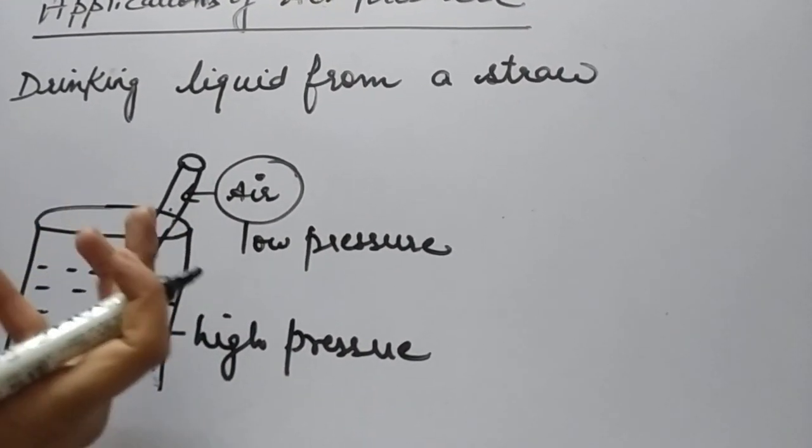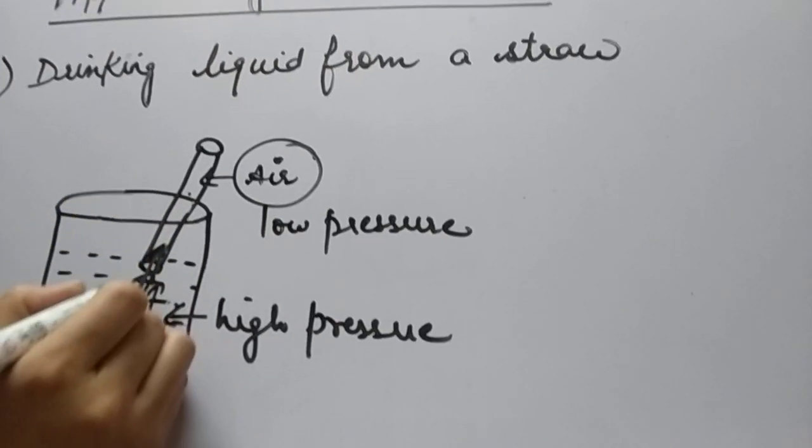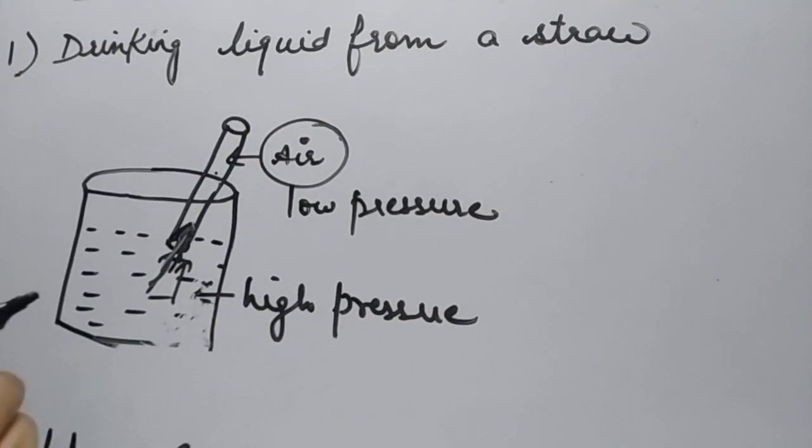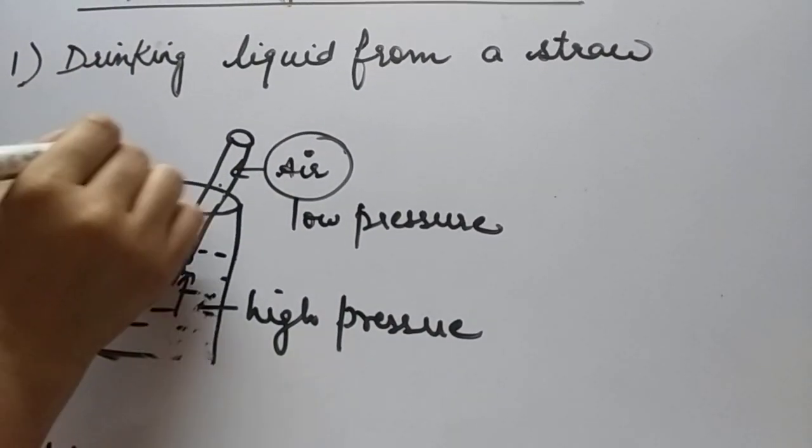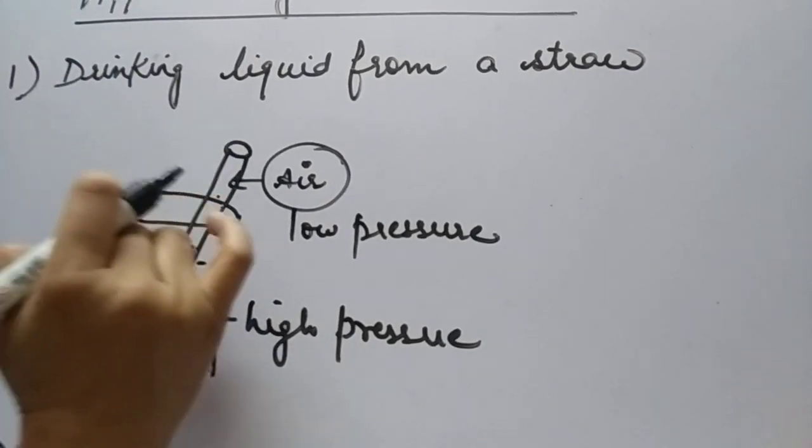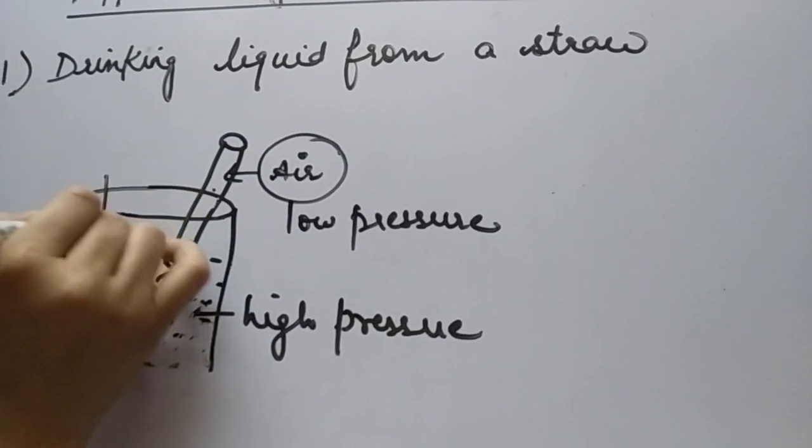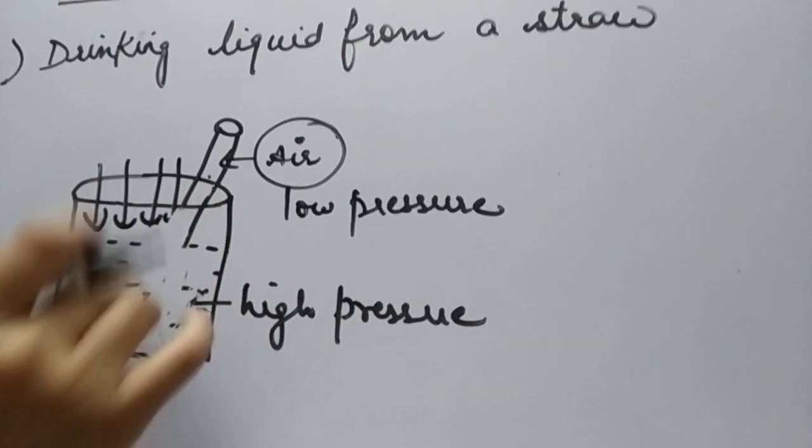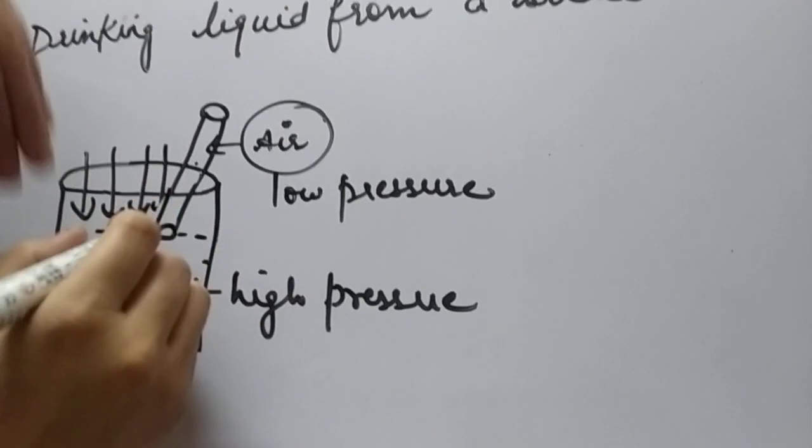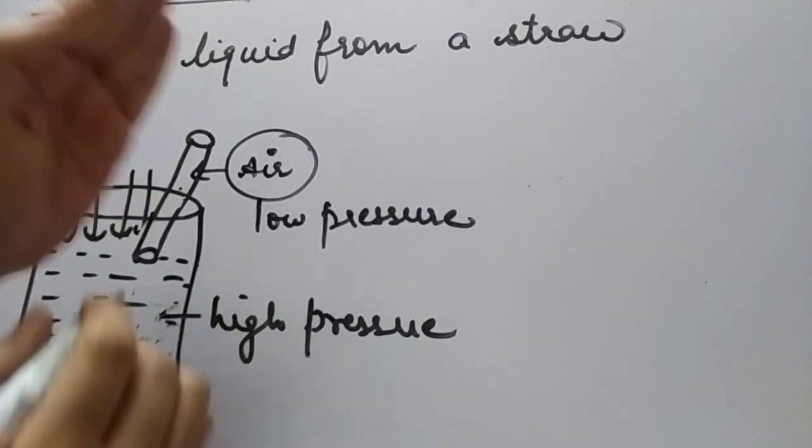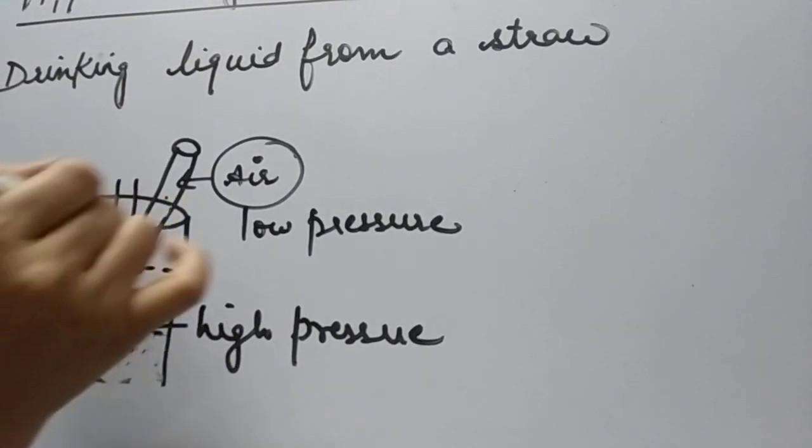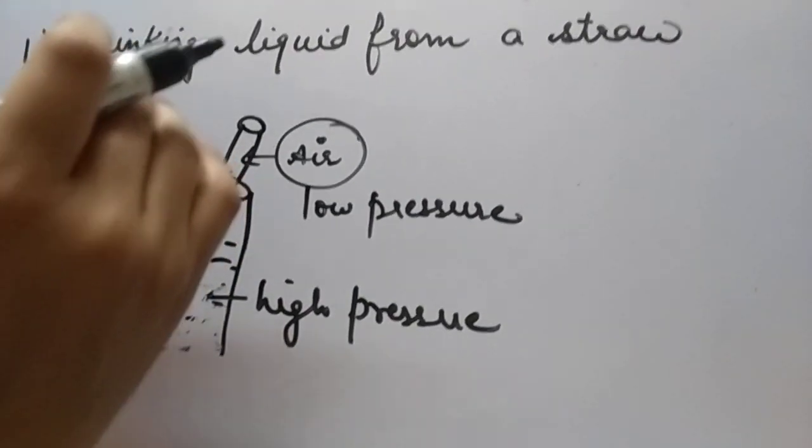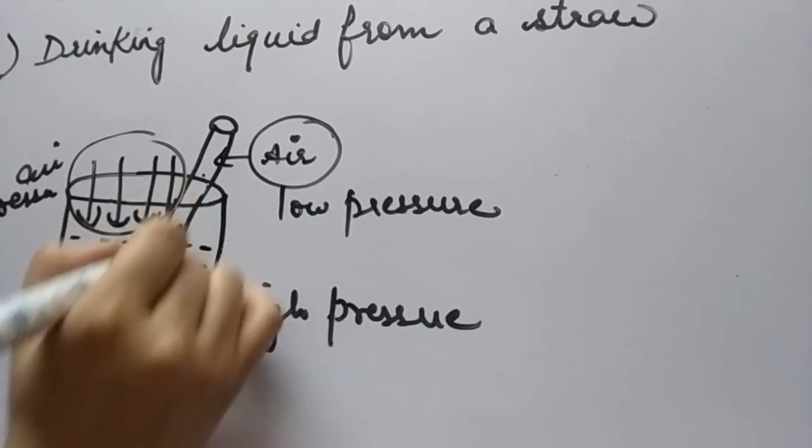Some force, some pressure is needed which can push this liquid from here inside the straw to your mouth. Now what is it? Whatever air is present here on the top of the liquid, that is applying atmospheric pressure over the liquid. It is forcing the liquid to move inside the straw. It is all because of this air pressure. This air pressure is forcing the liquid to move inside the straw.